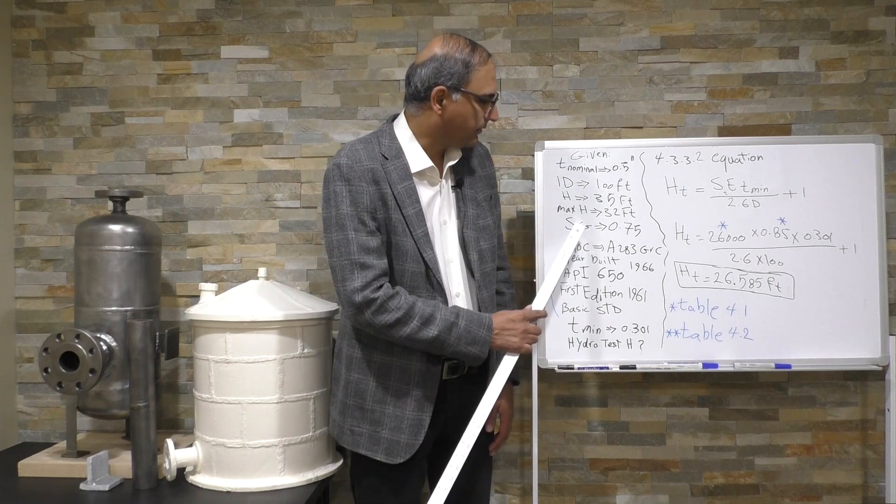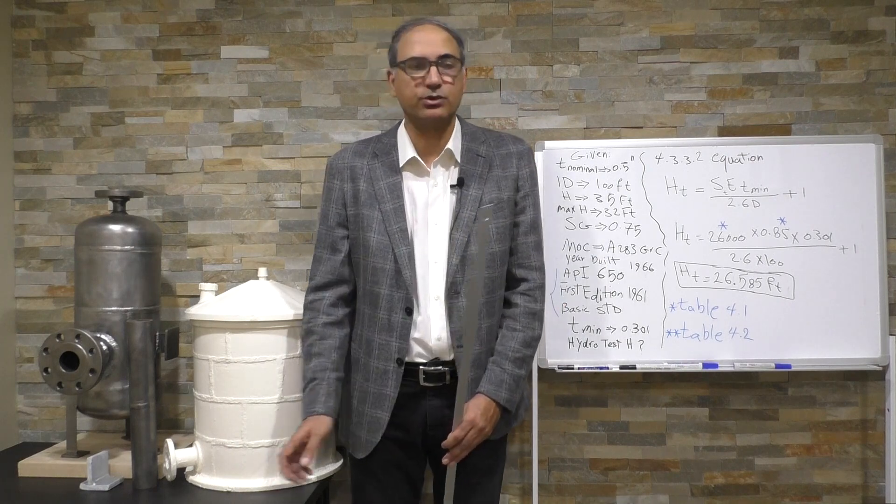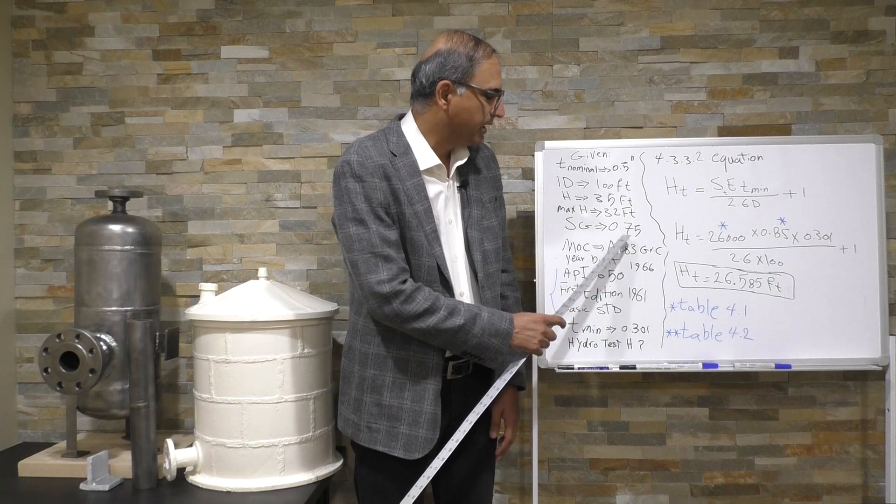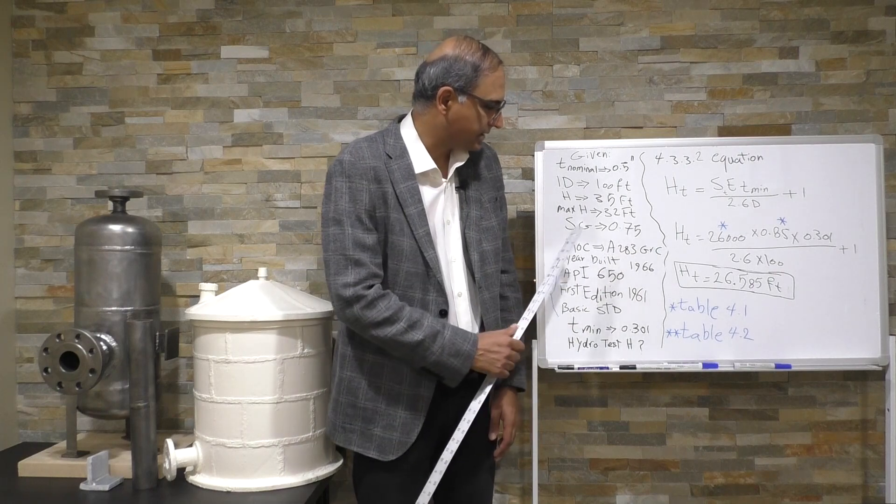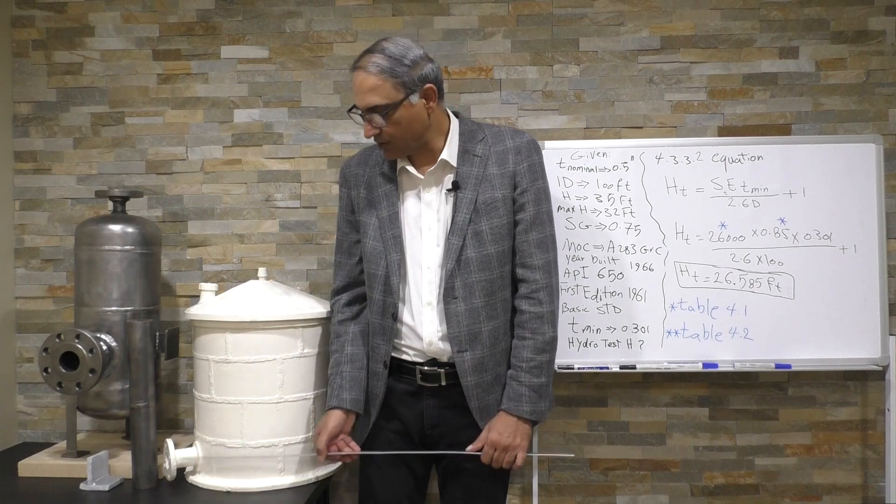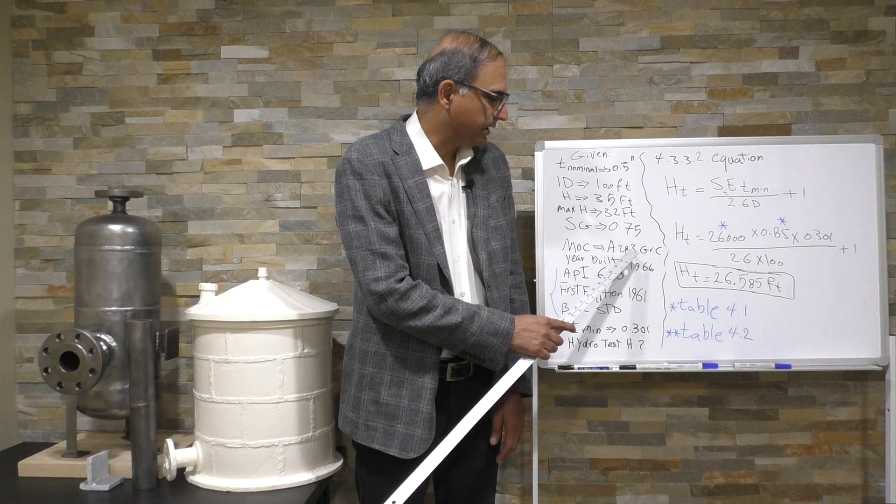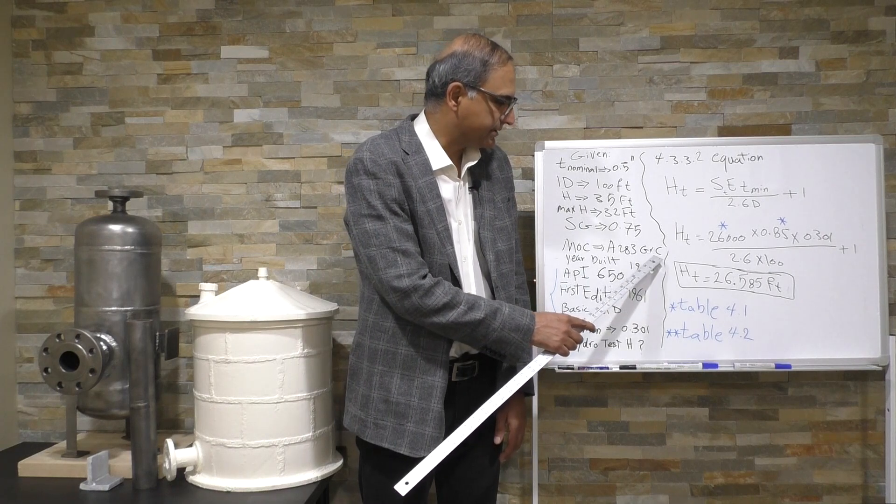Our specific gravity for the product that is going to be stored in this storage tank is 0.75, it's unitless, and the material of construction for this shell is ASTM A283 grade C material.